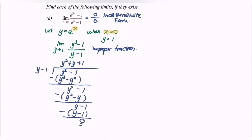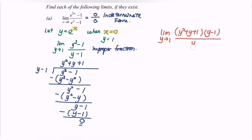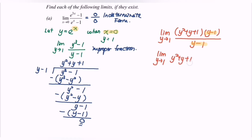We rewrite the expression on the right-hand side: limit as y approaches 1 of (y squared plus y plus 1)(y minus 1) over (y minus 1). We notice that (y minus 1) is a common factor in the numerator and denominator, so we cancel it. This gives the limit as y approaches 1 of y squared plus y plus 1. Substituting y equals 1 gives 1 plus 1 plus 1, which equals 3.